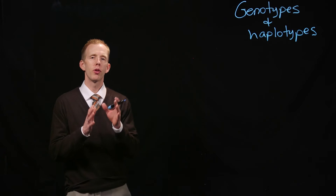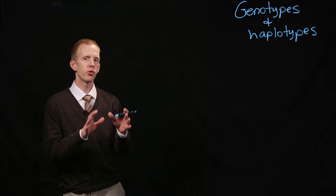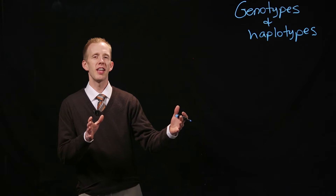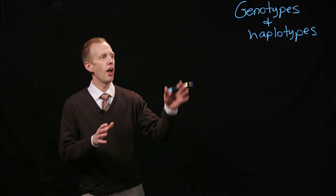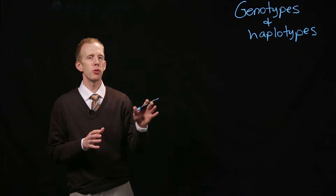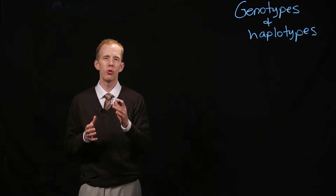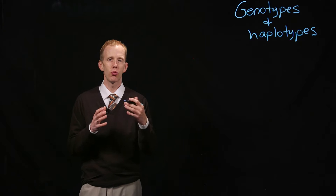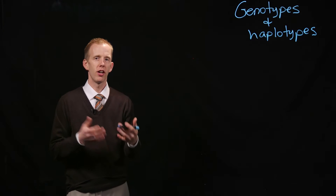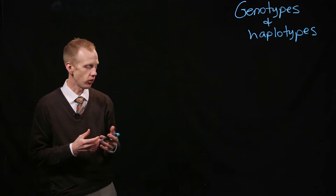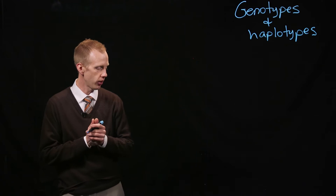I wanted to present you with a brief description, and we're going to draw a table here about the difference between genotypes and haplotypes, and how geneticists represent a genotype and a haplotype using genetic annotation.